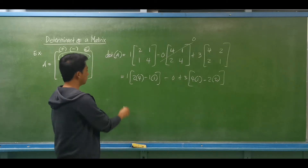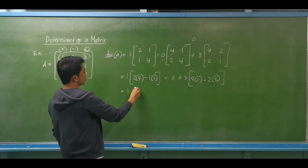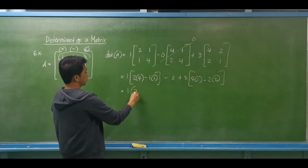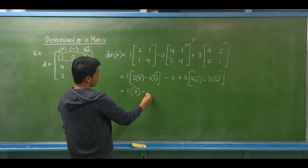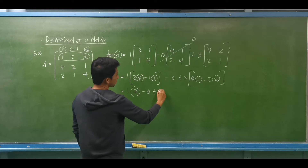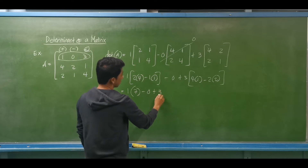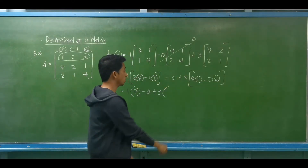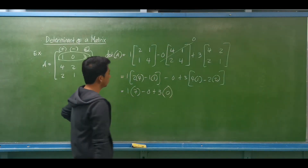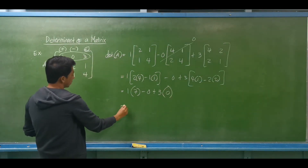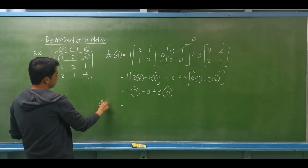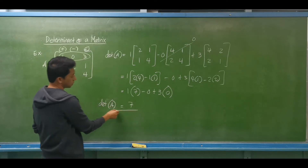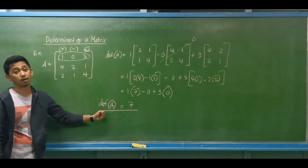Simplifying: 1 multiplied by (2 times 4 is 8 minus 1) equals 7, minus 0, plus 3 multiplied by (4 times 1 minus 4), which equals 0. Therefore, the determinant of matrix A is positive 7.